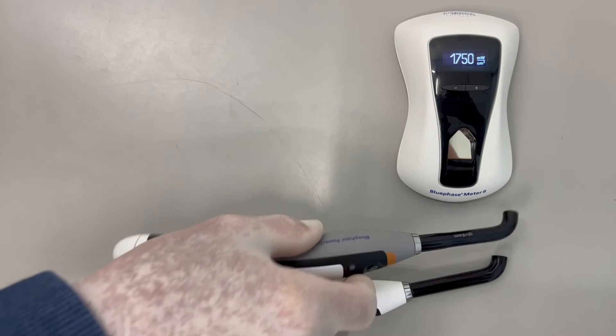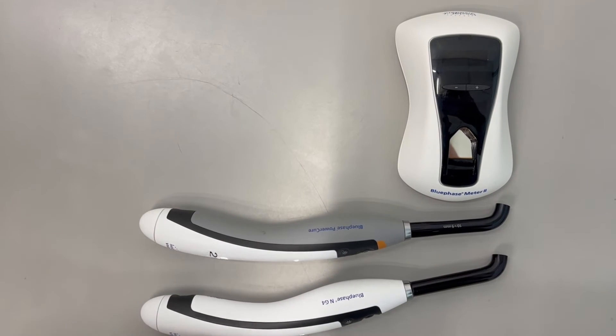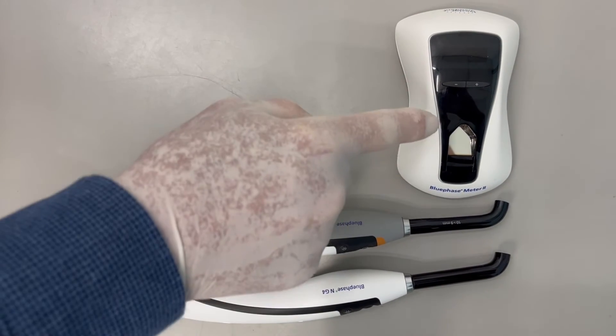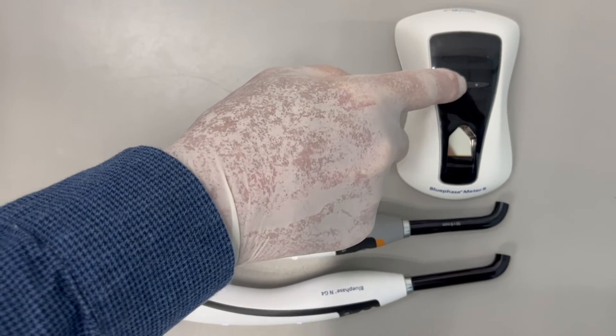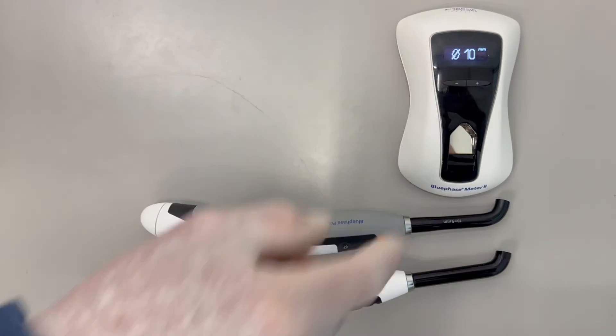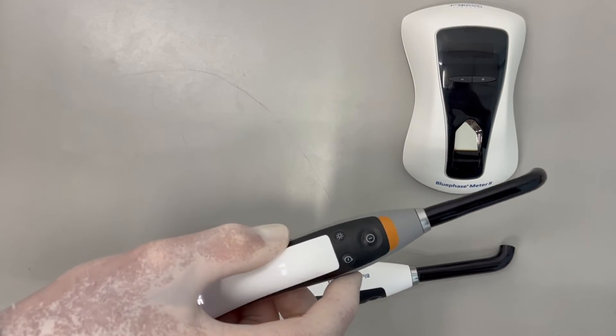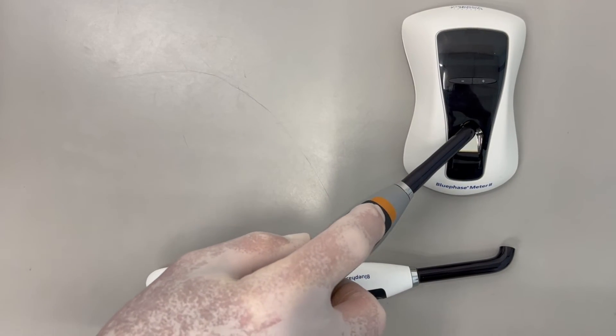On both high and turbo settings, these two lights deliver the same output. If we measure the PowerCure using a tip diameter of 10mm, the irradiance falls to 1430. However, because we entered the wrong tip diameter, that is not the correct irradiance.